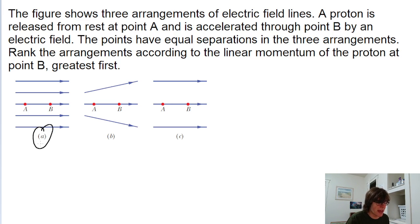For diagram A, we can see that there are five electric field lines that are all pretty close together. And in part C, we can see that there are only three that are further apart. So the electric field in diagram A is stronger than the electric field in diagram C.